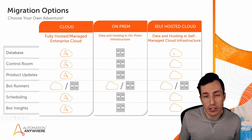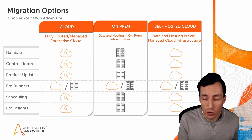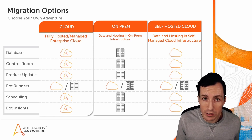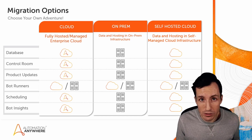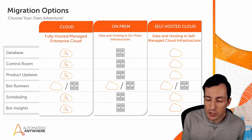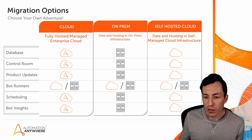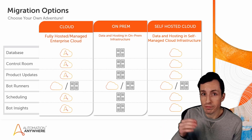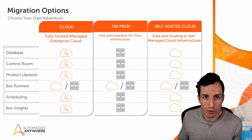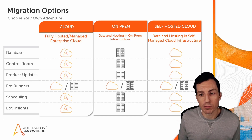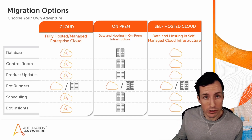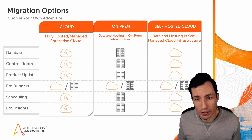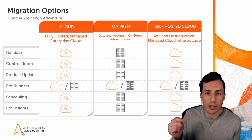In self-hosted cloud, all the data and hosting use on-prem infrastructure but placed in your own managed cloud — not Automation Anywhere's managed cloud. You still need to handle clustering, database reliability, and product updates yourself. If dot 24 or dot 25 comes out, you need to deploy and install that yourself whether it's on on-prem or self-hosted cloud. I'll share documentation links to all three implementations in the description.